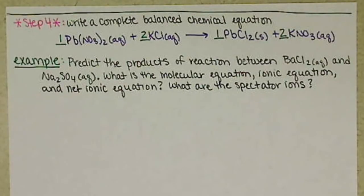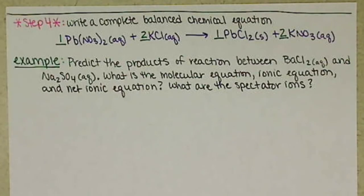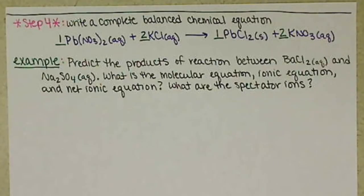We want to predict the products of a reaction between barium chloride, BaCl₂, and sodium sulfate, Na₂SO₄. We want to know what is the molecular equation, what is the ionic equation, and what is the net ionic equation — so we'll have three different equations telling us different pieces of information.